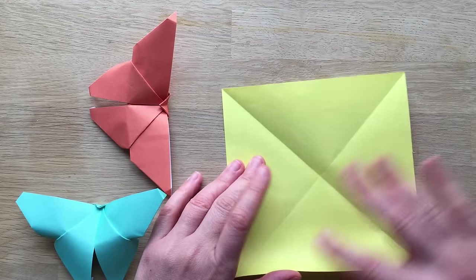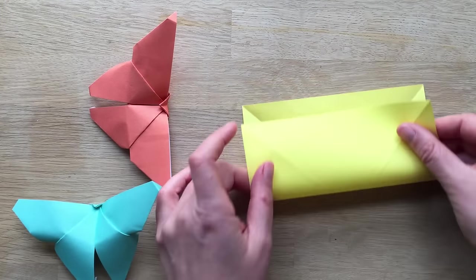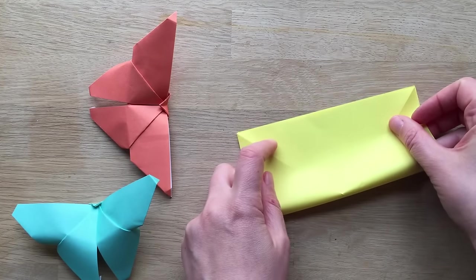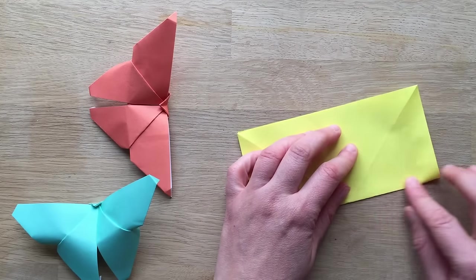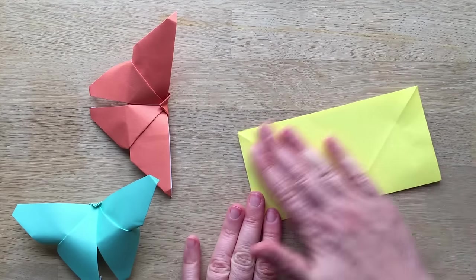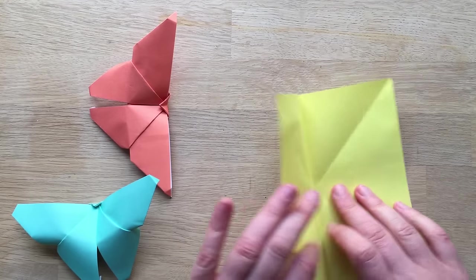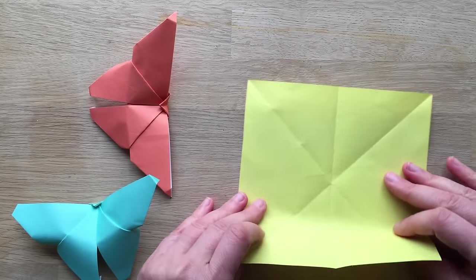Now you fold it length to length and again if you've done it neatly so far, the crease will meet exactly in the middle which it has. Phew! Origami is a great way to sort of, when you open it up, turn it round.